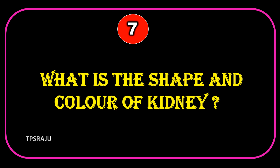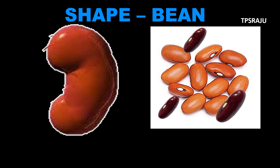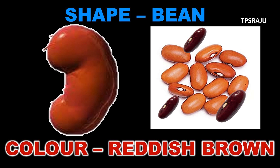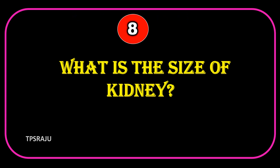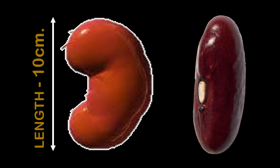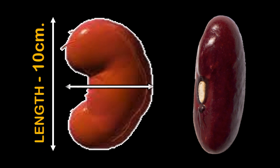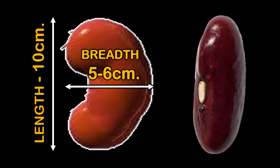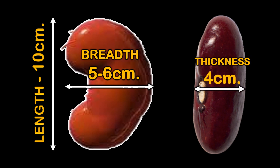What is the shape and color of the kidney? Bean shape, reddish brown in color. What is the size of the kidney? Length 10 cm, breadth 5–6 cm, thickness 4 cm.